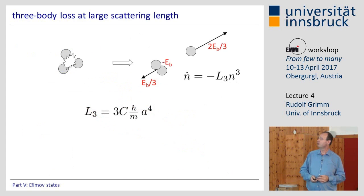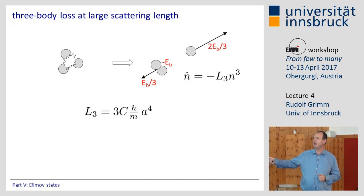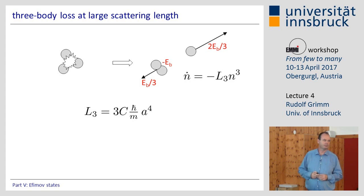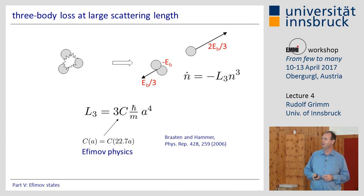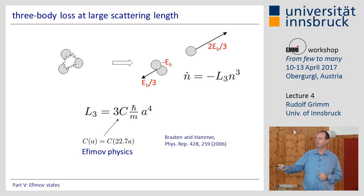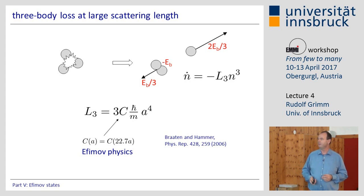Three-body decay follows an a⁴ dependence. There's a coefficient C that depends on the scattering length in a log-periodic way — whenever I increase the scattering length by a factor of 22.7, I get the same number again. This periodicity shows up and is how we can see Efimov physics.